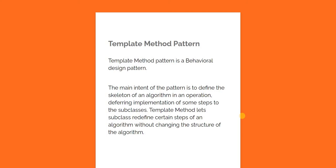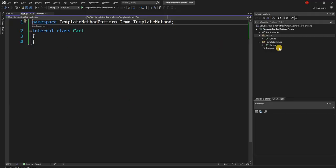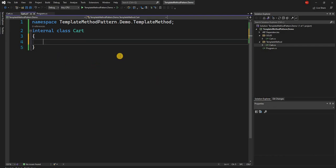For explaining this in a programming context, I'm going to talk about an example of a simple shopping cart which will have a checkout process consisting of multiple steps, out of which one step will be a template method overridden by classes to give their own implementation. After implementing this using the template method, I am also going to implement it using the SOLID design principles. So let's start with the template method example first.